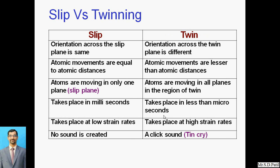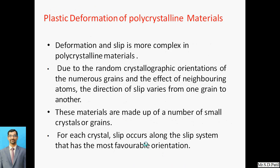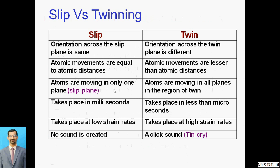Comparing slip and twinning: in slip, orientation across the slip plane is the same; for twinning, orientation across the twin plane is different. Atomic movements in slip are equal to atomic distances, whereas in twinning they are less than atomic distances. In slip, atoms move in only one plane; in twinning, atoms move in all planes in the region of twin. Slip takes place at a low strain rate; twinning requires a high strain rate and occurs in less than microseconds.